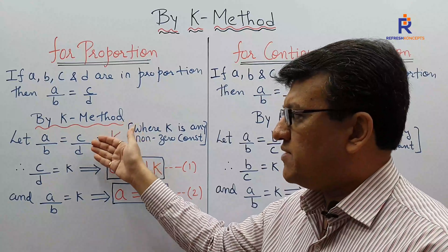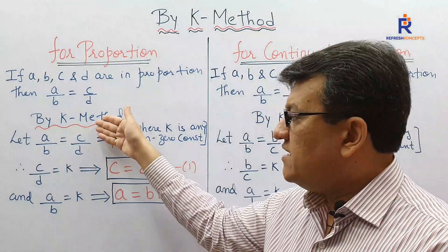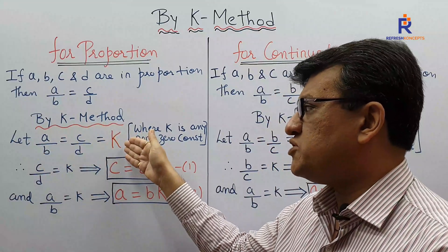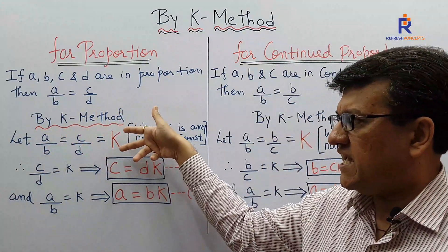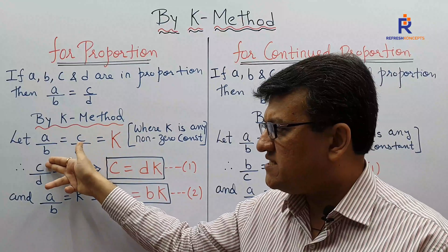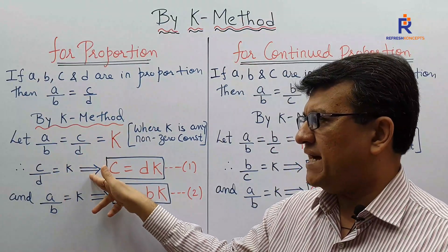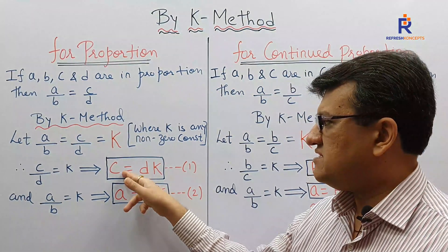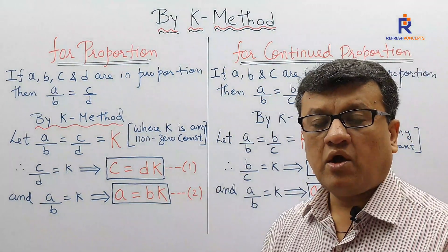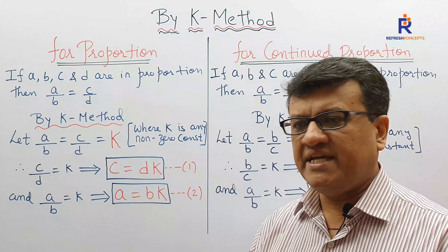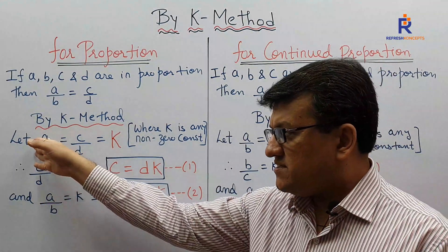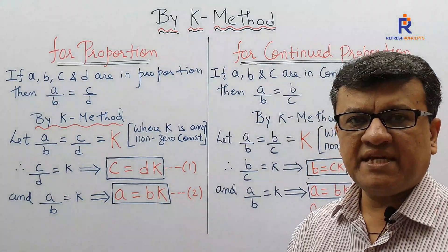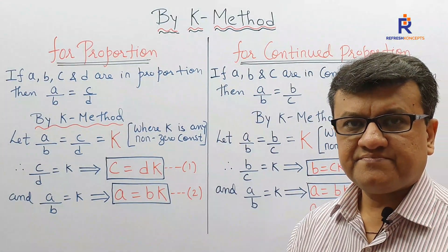We start with the extreme right: let C by D equals K. On cross multiplication, C equals DK. So from the extreme right we get C equals DK.